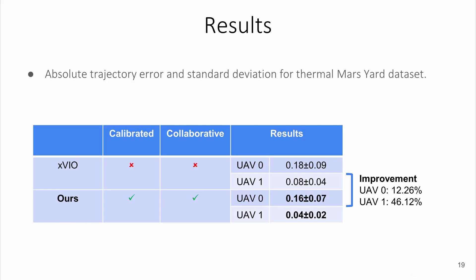Using photometric calibrated thermal data and the collaborative fusion strategy can almost halve the absolute trajectory error of the system, bringing a significant improvement to the state of the art.